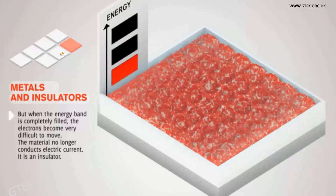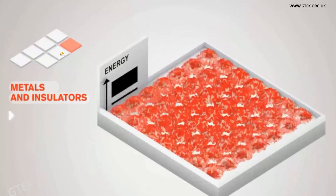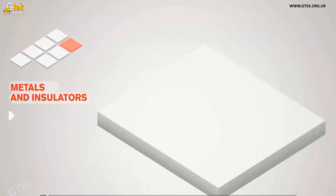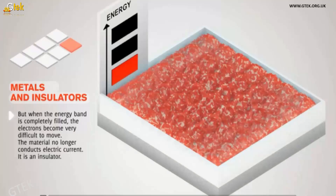When the energy band is completely filled, the electrons become very difficult to move and the material no longer conducts electric current — this is what is called an insulator. You can see the energy level depiction here, which has been done in the lab for the experimentation of metals and insulators.